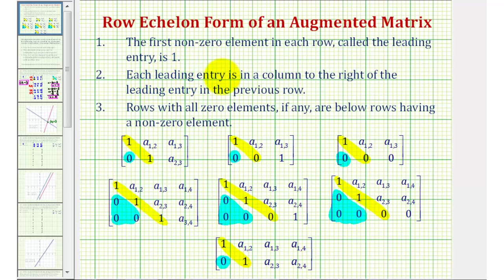Second, each leading entry is in a column to the right of the leading entry in the previous row. And three, rows with all zero elements, if any, are below rows having a non-zero element.